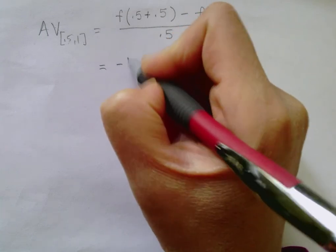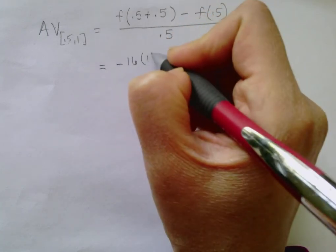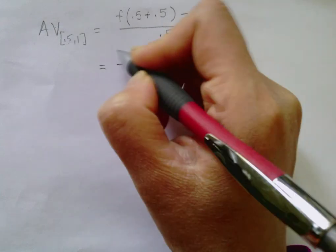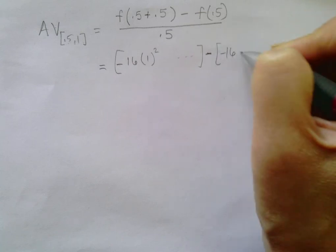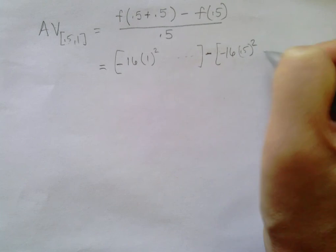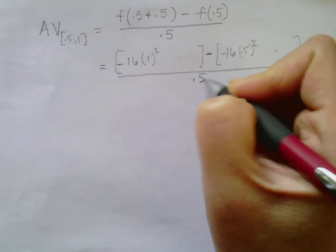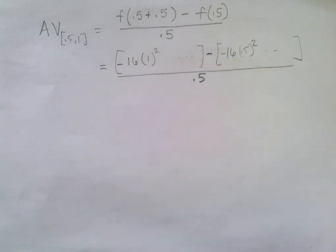And we'd go through exactly the same procedure. So with our previous equation, what was this? This is negative 16 times 1 squared, etc., this quantity minus negative 16 times 0.5 squared, etc., over 0.5. The actual computation is the same, but the notation is different.